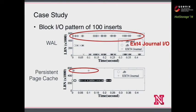The block IO pattern comparison shows that the persistent page cache eliminates all database log IOs and almost all ext4 journal IOs. This means the journal-over-journal anomaly is resolved automatically by the persistent page cache.